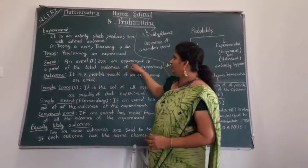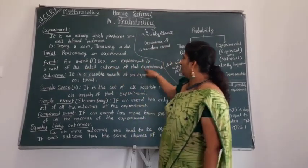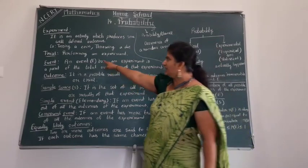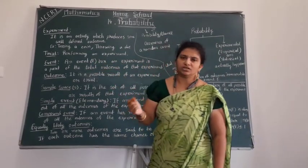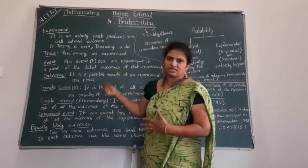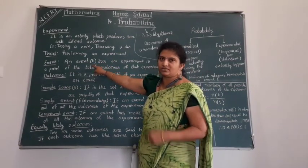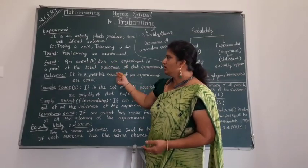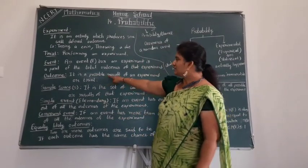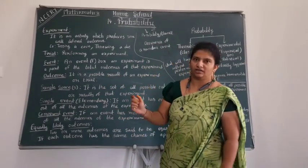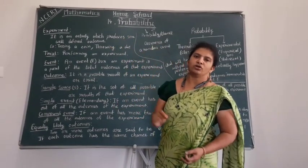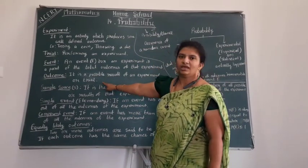An event for an experiment is a part of the total outcome of the experiment. Event is represented by the capital letter E. In a question there might be many events asked, so you can choose letters A, B, C or label them E1, E2, E3, and so on. An outcome is a possible result of an experiment or a trial. When we do a trial, such as tossing a coin, the result we get is none other than the outcome.